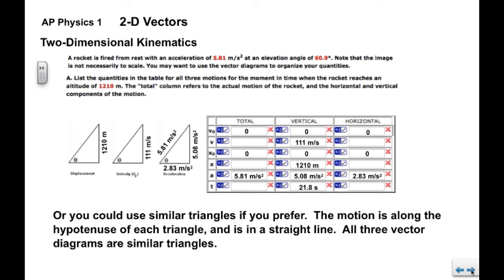If you prefer similar triangles, the motion again is along this straight line here. So, all three of these triangles have the same angle, they're all similar triangles. You can set up ratios and find the other sides of each of those triangles.